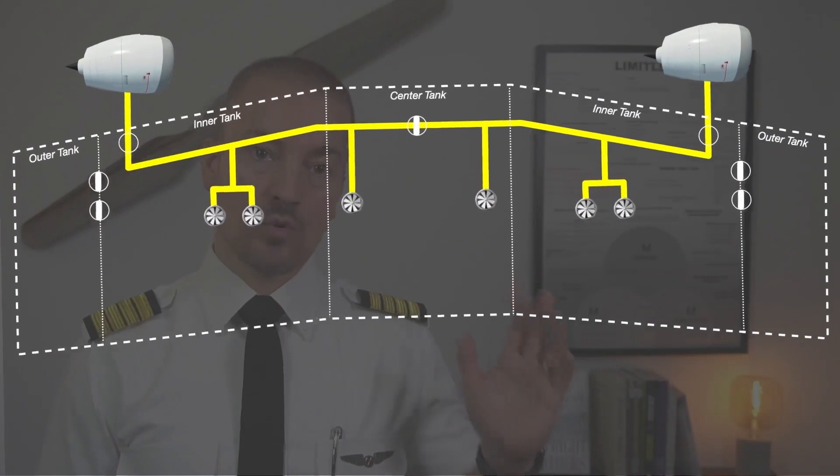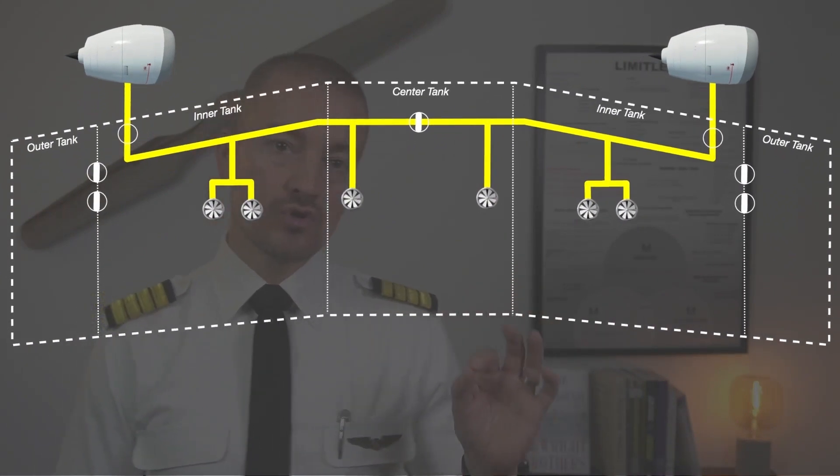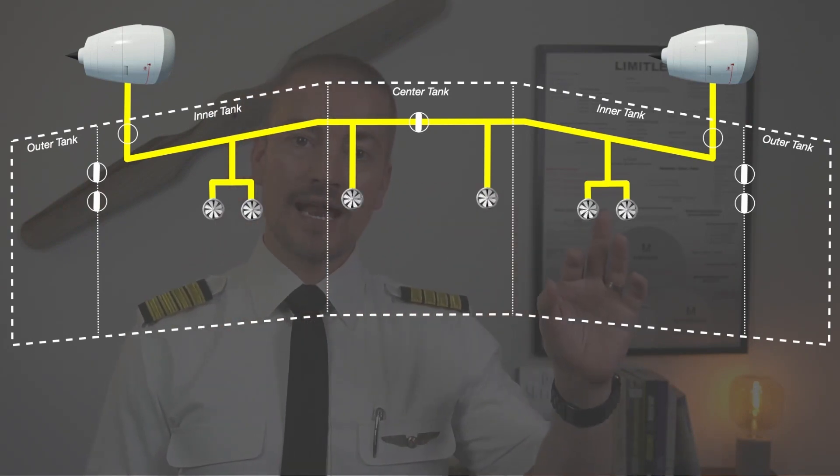In the A320, there are two fuel system options, the older and the newer version. The older version incorporates six electrically driven booster pumps located inside the center and inner wing tanks.